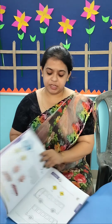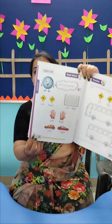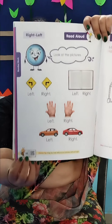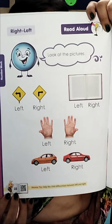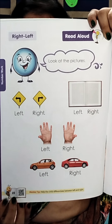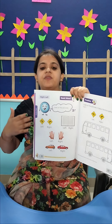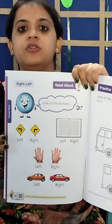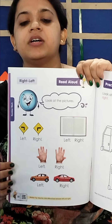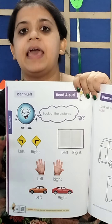Now in this book we will open page number 2222. Here in this page, as you all can see, various pictures are being provided to make you understand about the concept of left and right.